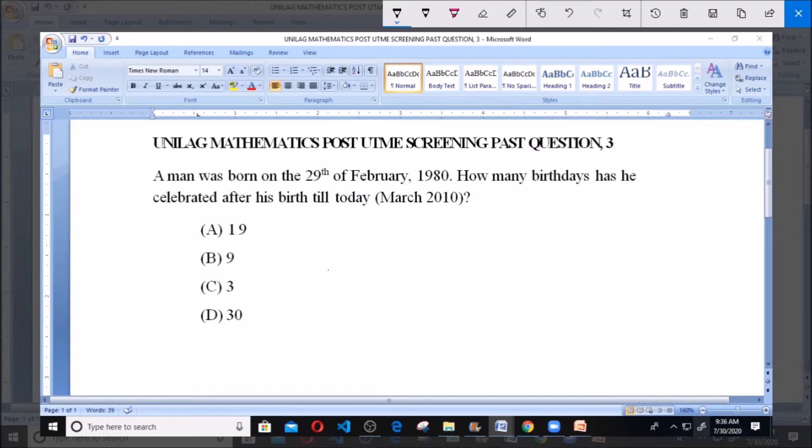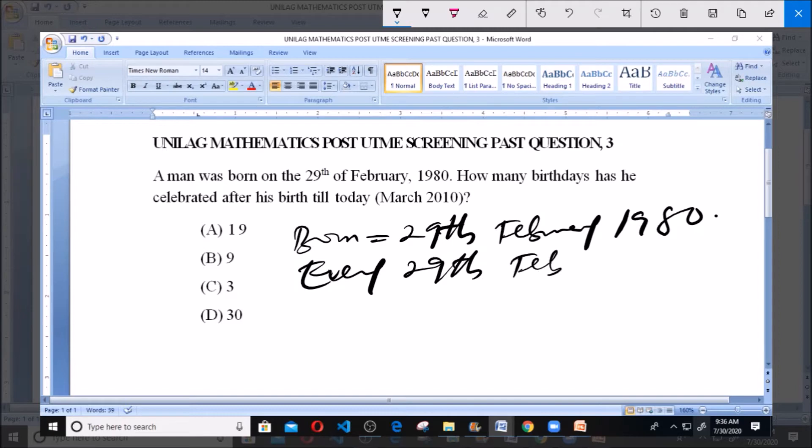Now assuming the date of today is March 2010, according to this question, the man was born on the 29th of February 1980. It means every 29th of February he celebrates one year.